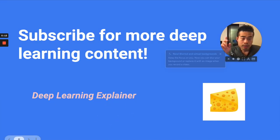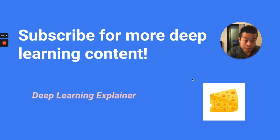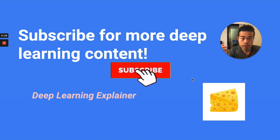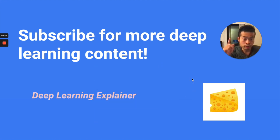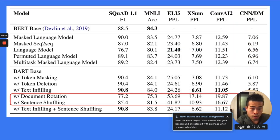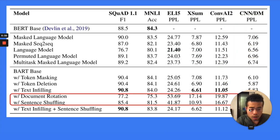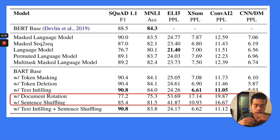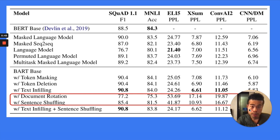I make deep learning videos every week. If you'd like to receive more content like this about deep learning, don't forget to subscribe. Now we know how BART was pre-trained: the BART architecture is just a transformer, and the pre-training objectives are these six strategies. You can implement that yourself, since Hugging Face didn't release the pre-training scripts.